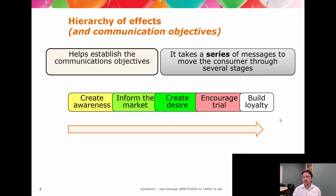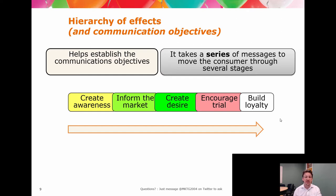Within advertising, one critical theoretical area is the hierarchy of effects model. When we talk about this model, we're talking about it as a way of thinking and seeing the world — there have been criticisms that you can't mathematically test it, but you wouldn't want to; that's not its purpose. The principle is that we can do a sequence of ideas: we can create awareness, inform the market, create desire, encourage trial, and build loyalty. Each of these steps represents a specific task.